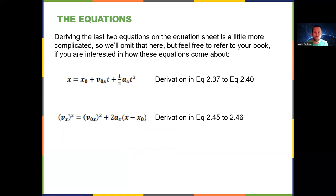Now, I could go through a derivation of the last two equations, but I'm not going to take the time to do that. It's a little bit more complicated. It's not overwhelmingly complicated. And if you want to see it in your textbook, look at the equation numbers. If you go to 2.37 to 2.40, then that is for this equation. And then similarly, 2.45 to 2.46 for this other equation, which I will point out does not involve time. All right, so that's the four kinematic equations that we're going to be using, all written in the x direction.